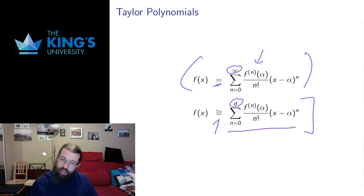So this is called the degree d Taylor polynomial of the function f at the center point alpha. Its terms are given the same way, they're higher derivatives evaluated at the center point. It just stops at a certain place. And I want to walk you through a couple of examples to show you how this works.